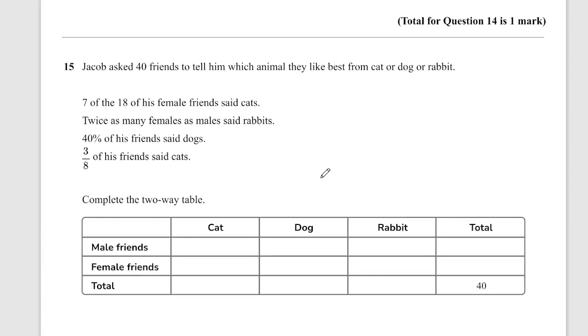Question 15. Jacob asks 40 friends to tell him which animals they like best from cats, dogs, and rabbits. We've got a two-way table and we need to put in some of the information. All I'm going to do is extract information from the question as kind of my stage one. We've got 40 friends which has already been entered. 7 of the 18 of his female friends said cats. So that means that we can do female friends of cats: 7. And 18 as the total females. Twice as many females as males said rabbits, I'll come back to that. 40% of his friends said dogs.